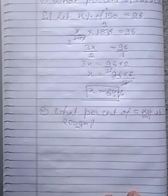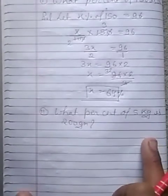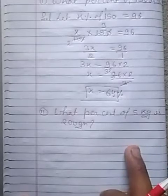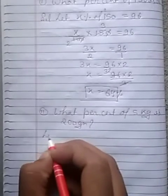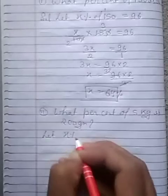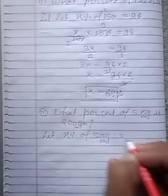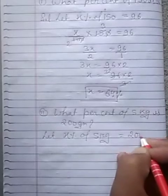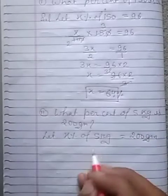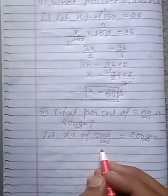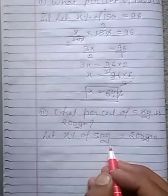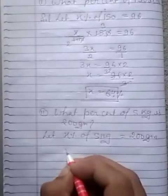What percent of 5 kg is 200 gram? Let x percent of 5 kg is equal to 200 gram. We know that 1 kg is equal to 1000 gram.